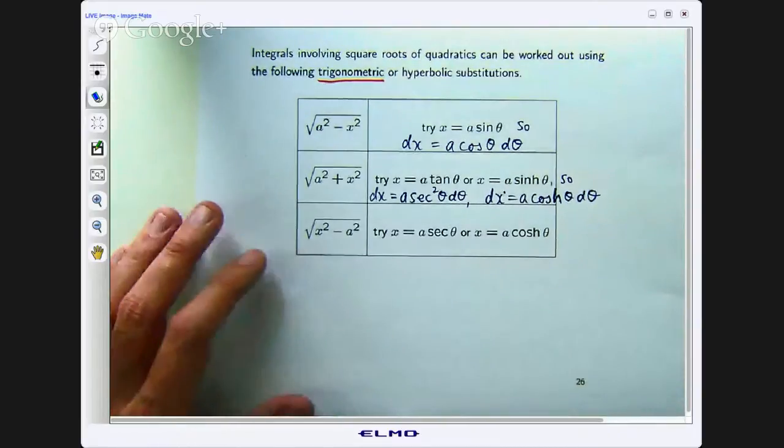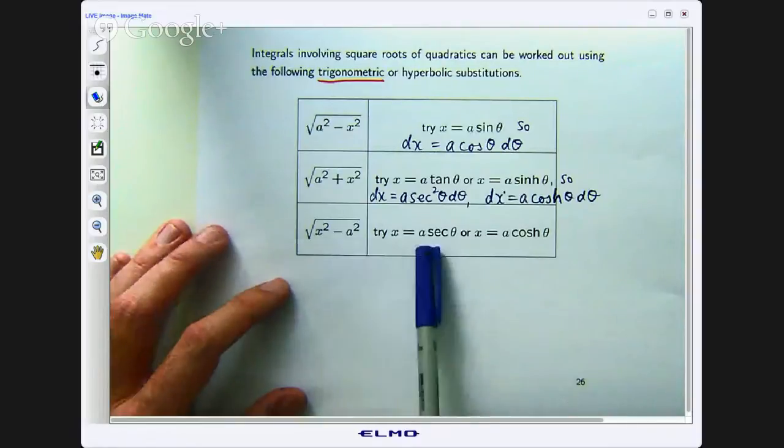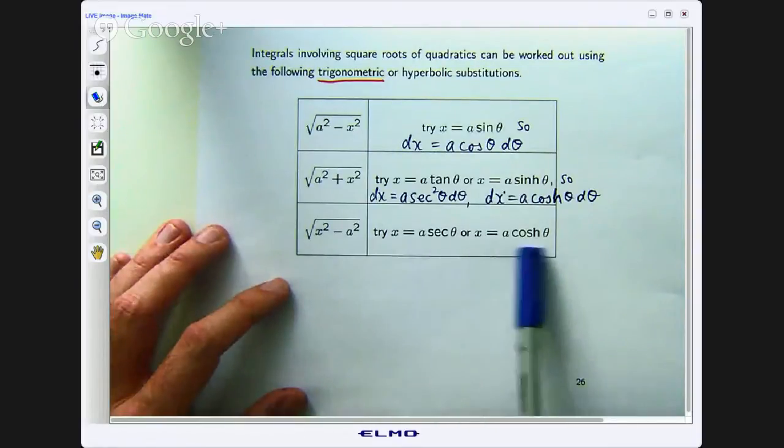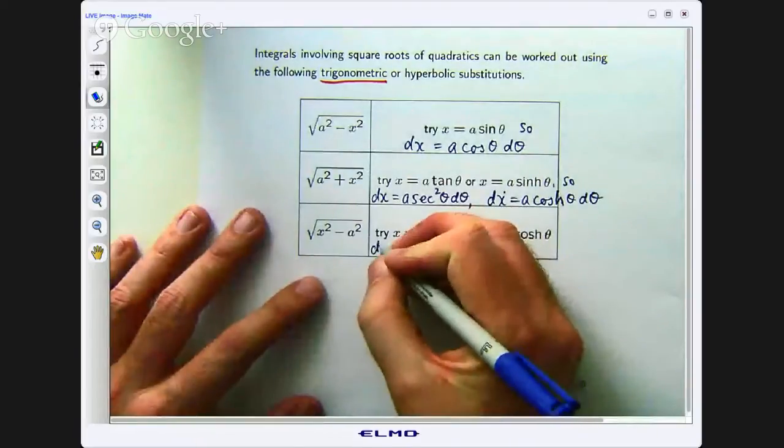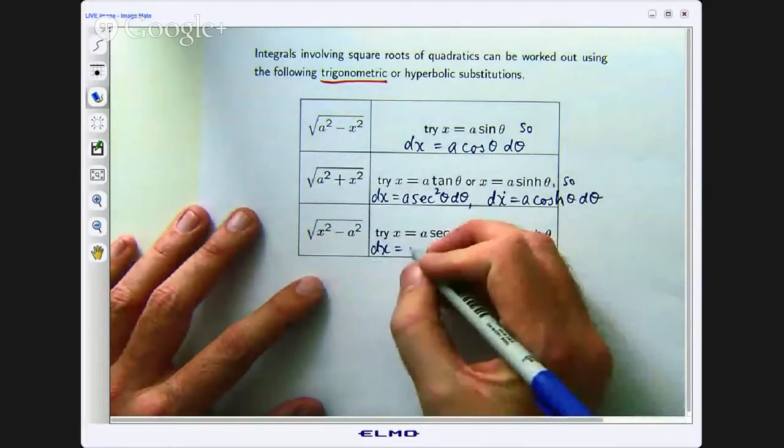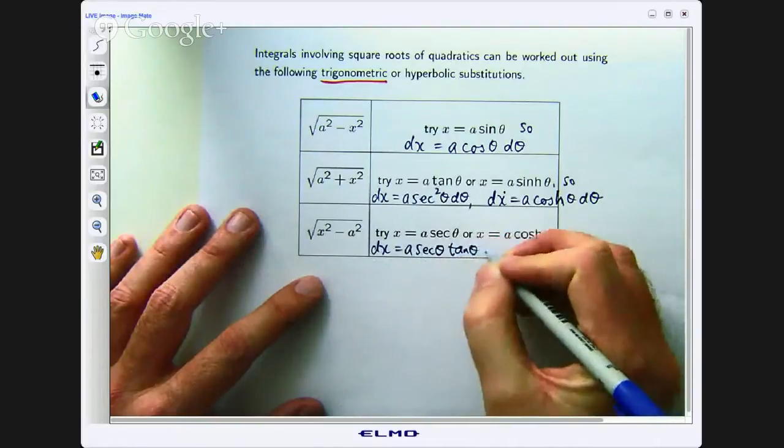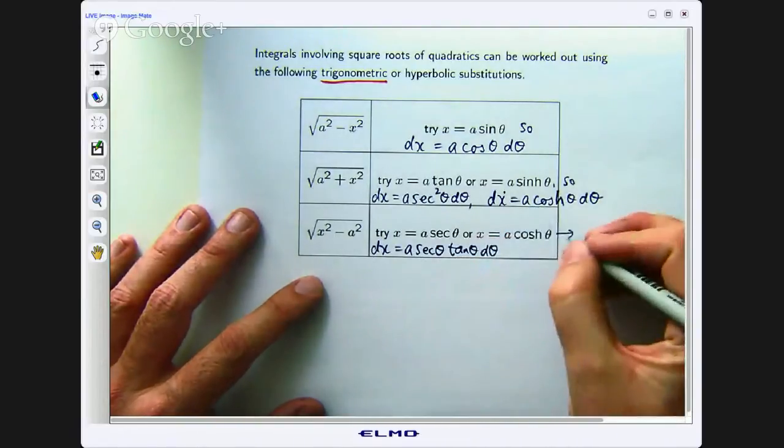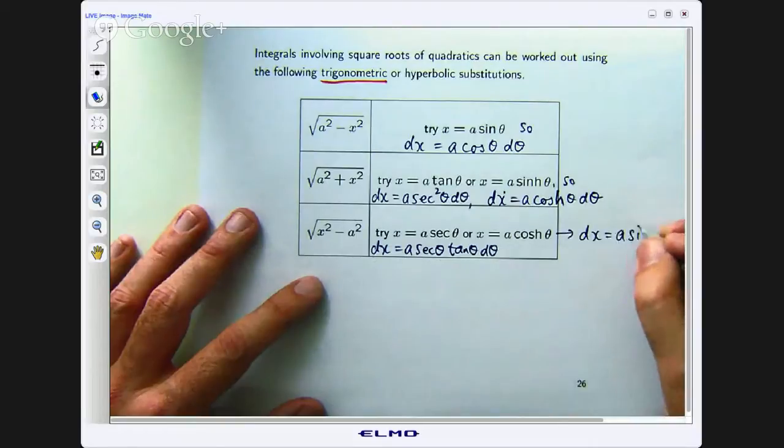Okay and lastly if you have an integral involving square root x squared minus a squared you can try x equals a sec theta or a cosh theta. In that case you would have dx so if you differentiate sec you get sec theta tan theta. And for this one let us just put it out here you would get dx equals a sinh theta d theta.